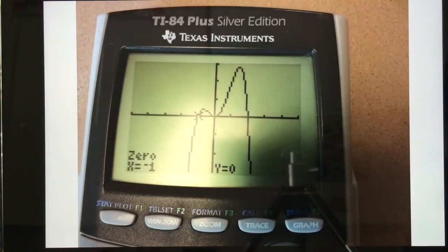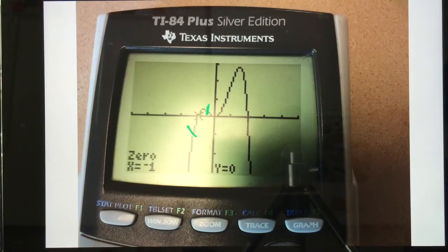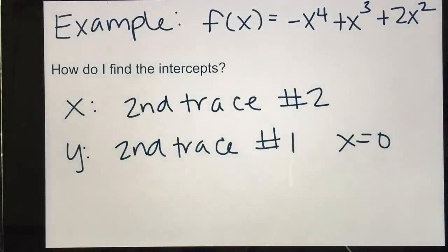So here is my first x-intercept. I did second trace, option number 2. I did my left bound and right bound, left bound down here, right bound up there. And then I found my first x-intercept is negative 1, 0. So for my x's, I have negative 1, 0. Any time we're looking for intercepts, that's a coordinate, an x and a y, and so I'm going to write it like a point.